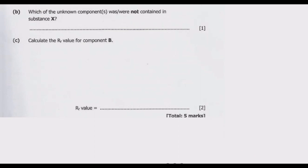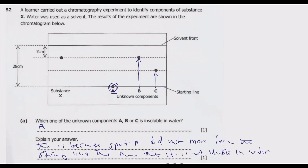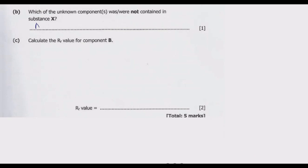Question B: Which of the unknown components was or were not contained in X? We have A, B, and C. B is the only one which moves up to the same line as where X is, so B was contained in X. But A, which is insoluble in water, and C did not match with X. Because X is soluble in water while A is not, and C is soluble but did not match X's position. So the answers are A and C.